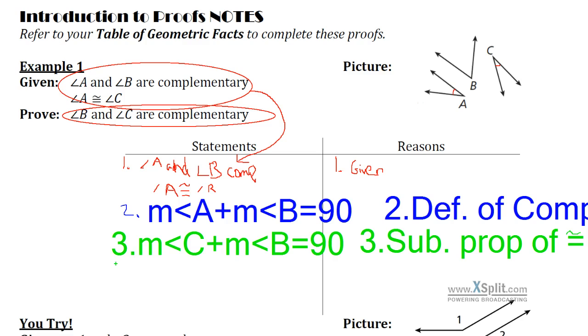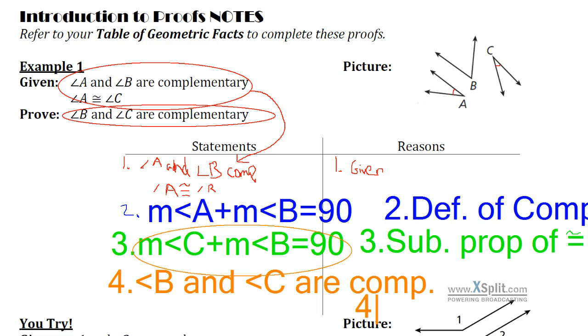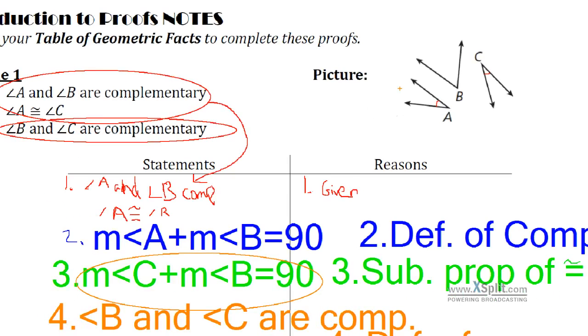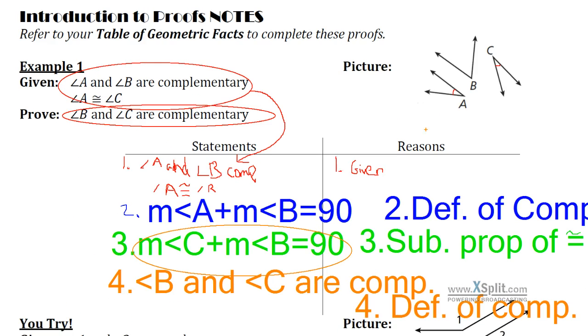And then for number four here, last step, I always want to repeat my goal. Angle B and angle C are complementary. How do we know that? Well, they add up to 90 degrees together. So for a reason, I can say definition of complementary. Again, definition of complementary says that they've got to be complementary to each other. They add up to 90.